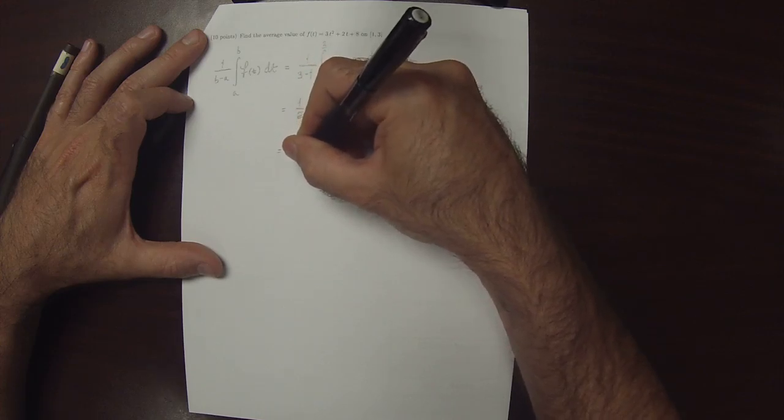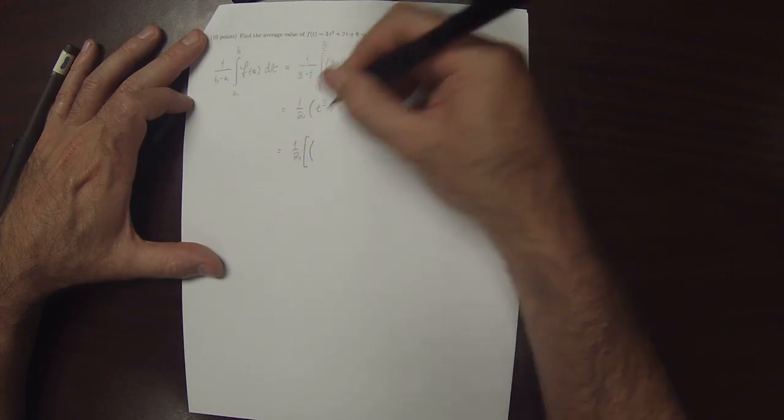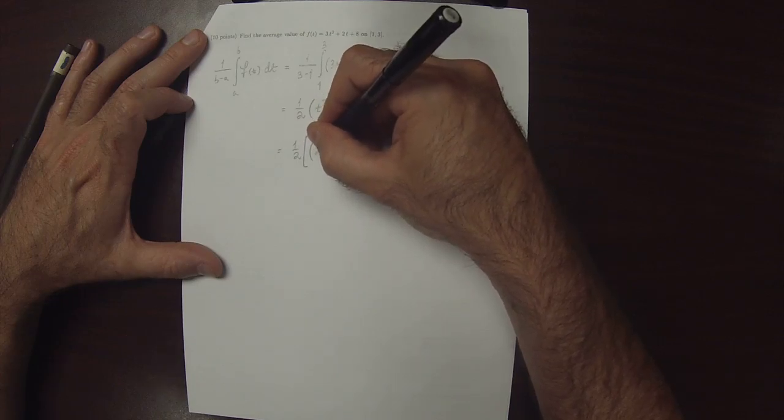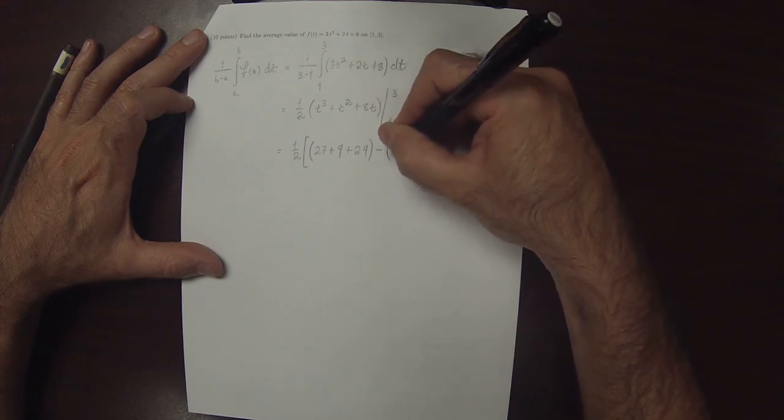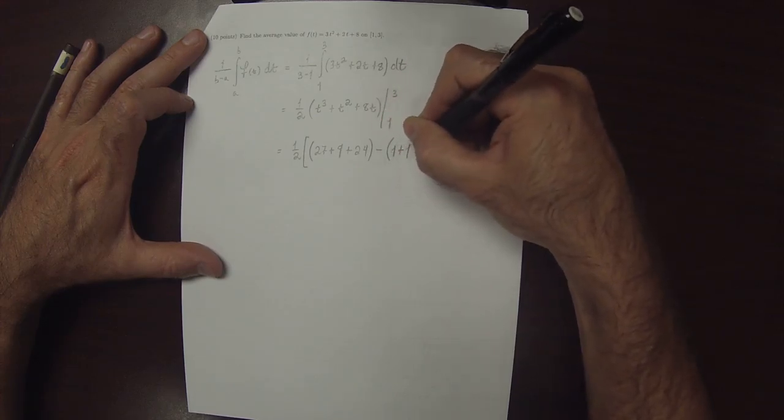So that's half. So plugging in 3, that's 27 plus 9 plus 24 minus 1 plus 1 plus 8.